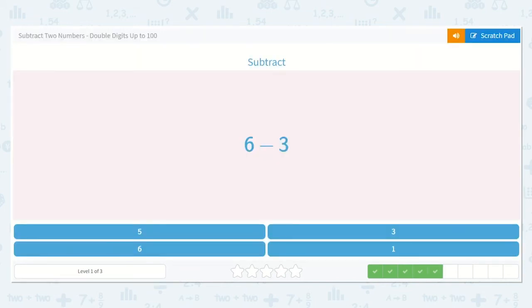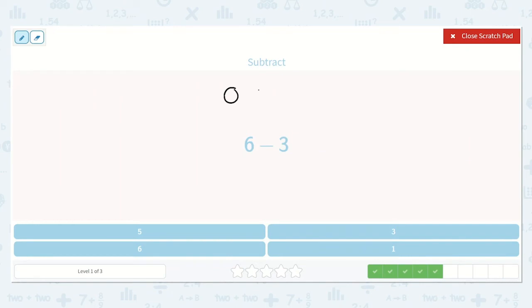Here we have 6 minus 3: 1, 2, 3, 4, 5, 6. And we're going to take away 3: 1, 2, 3. There are 1, 2, 3 left. I know that answer is reasonable because I know that 3 plus 3 is 6. So if we take away 1 of our 3s, we will only be left with 3. Alright, here's our answer.